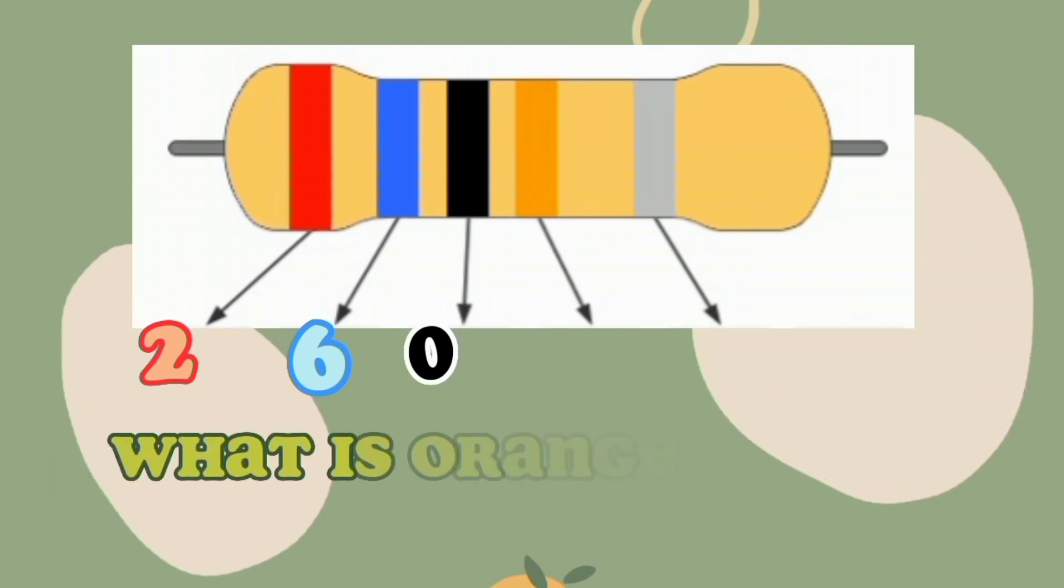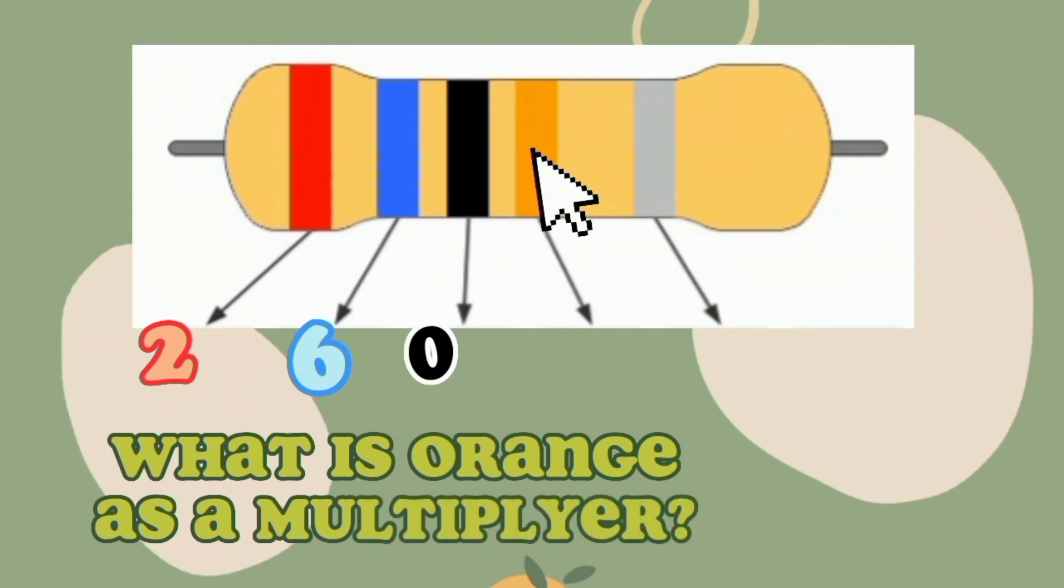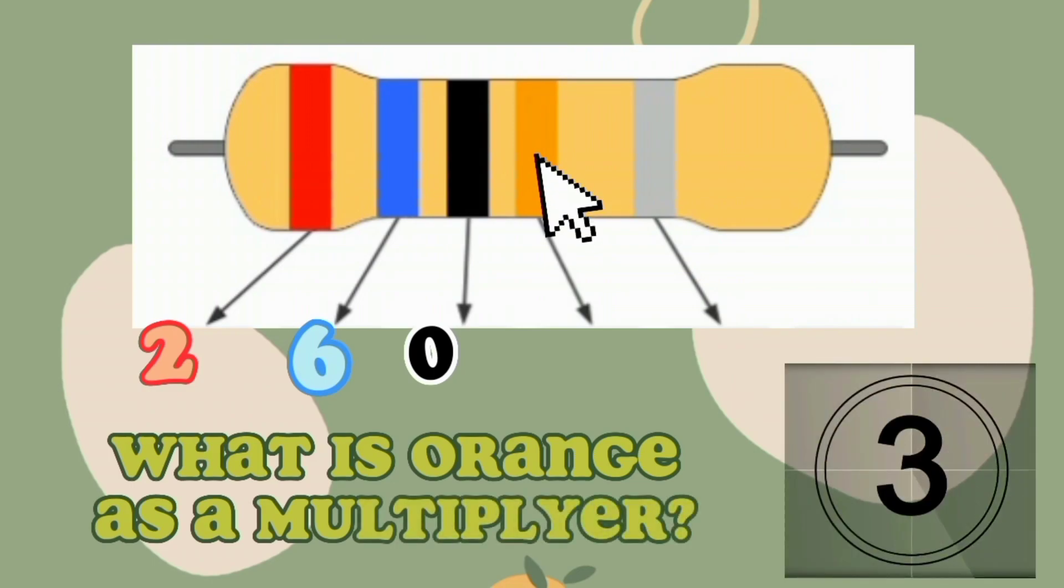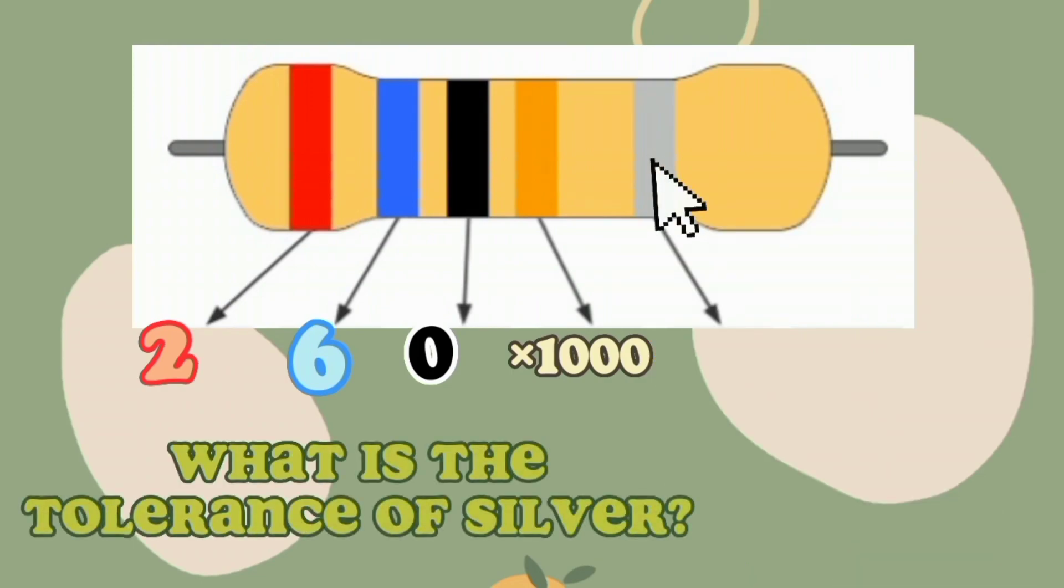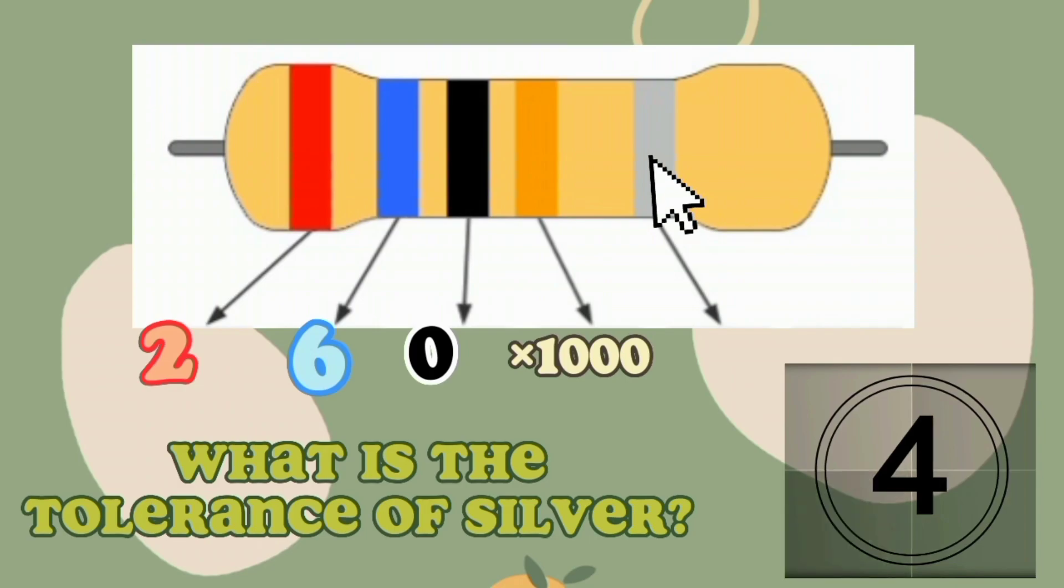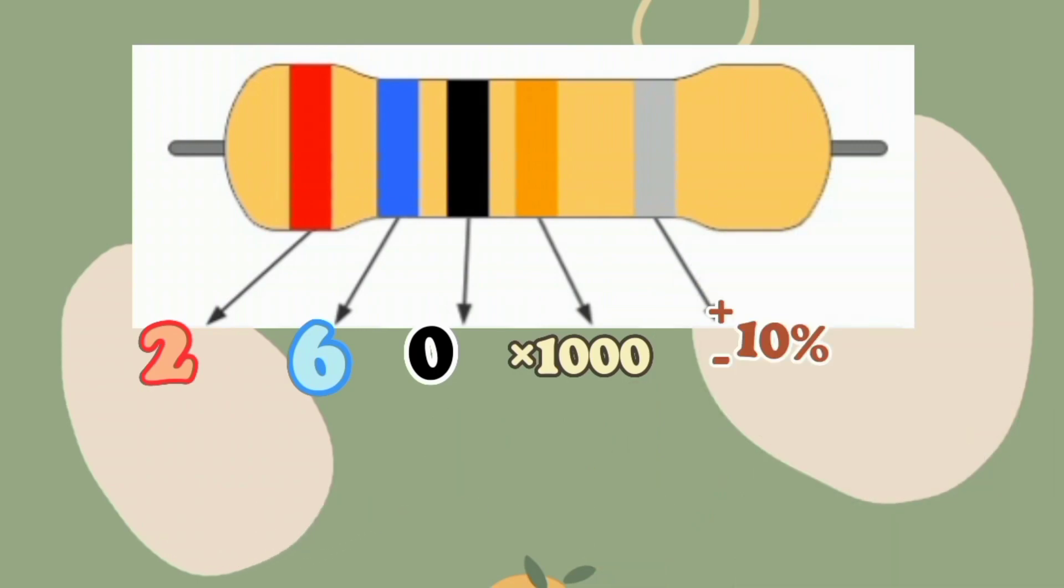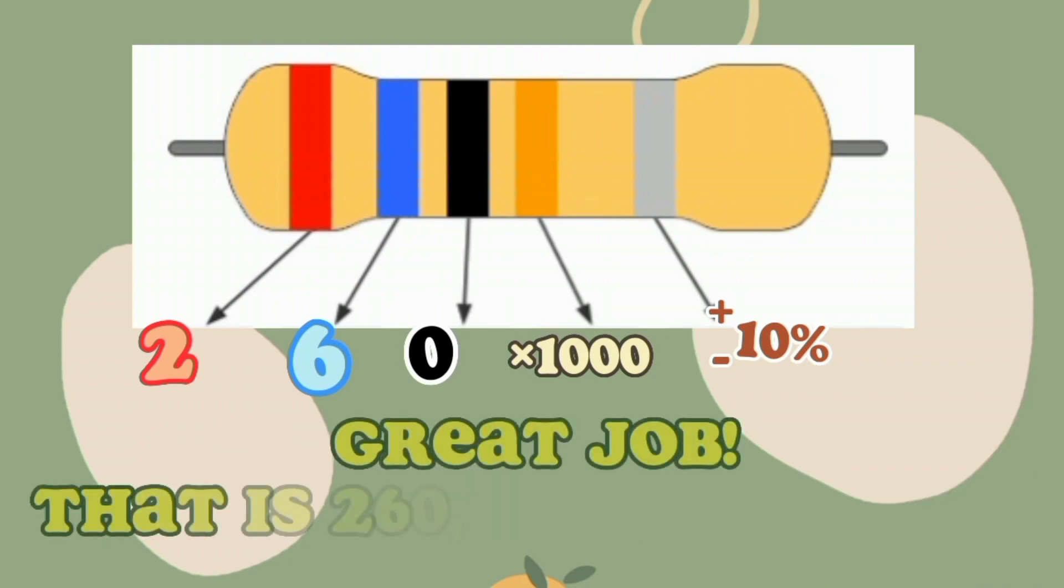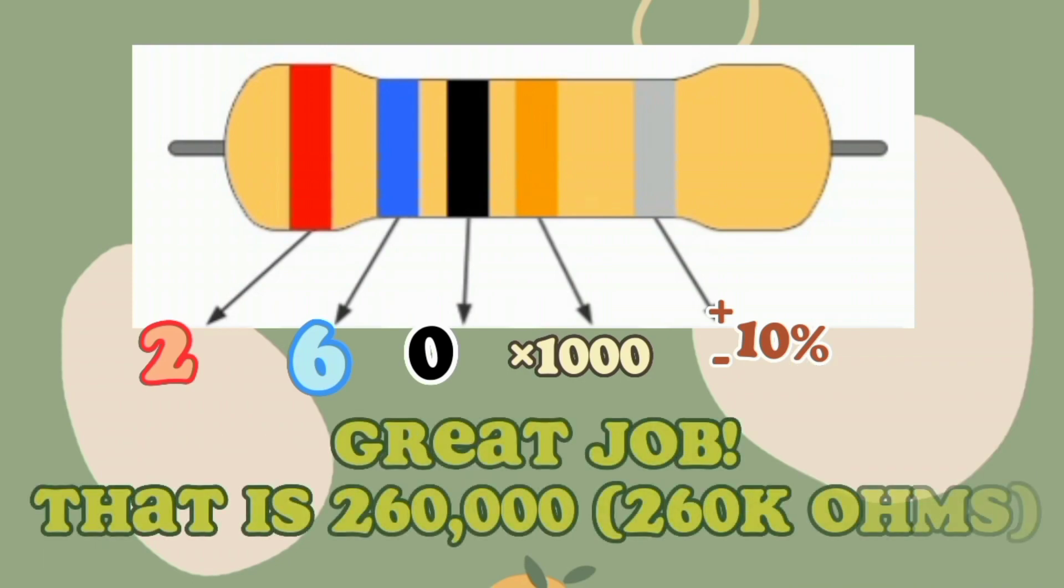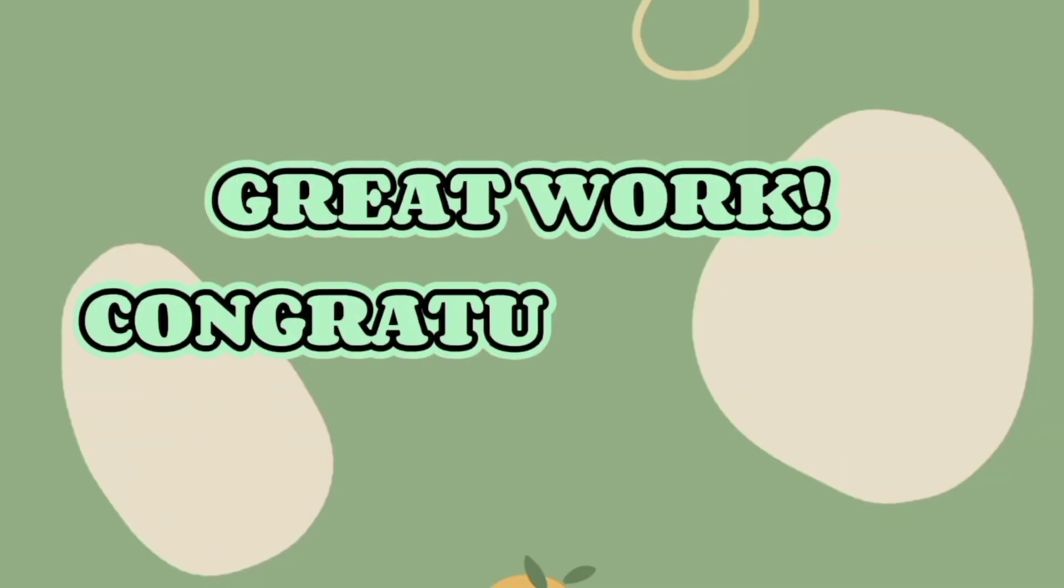What is orange as a multiplier? Great job! What is the tolerance of silver? Great! What is the resistance value? Great job! That is 260,000 ohms. Great work! Congratulations!